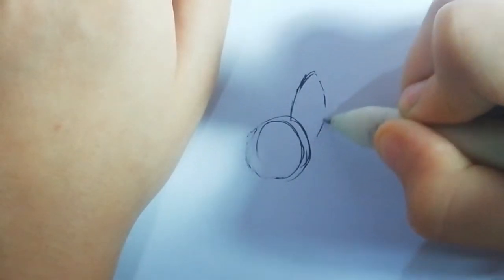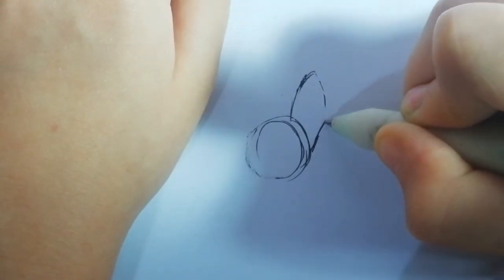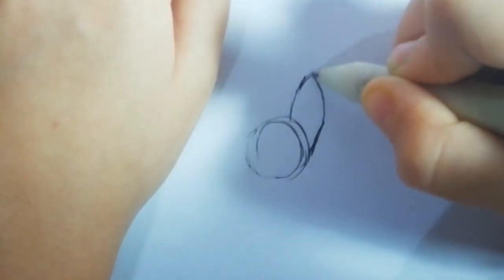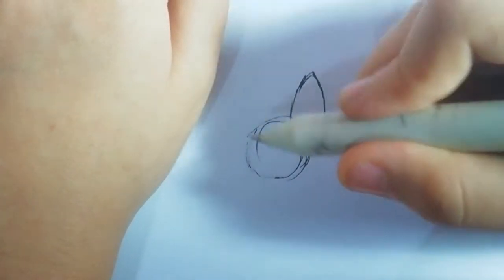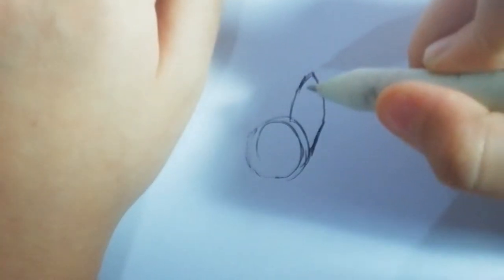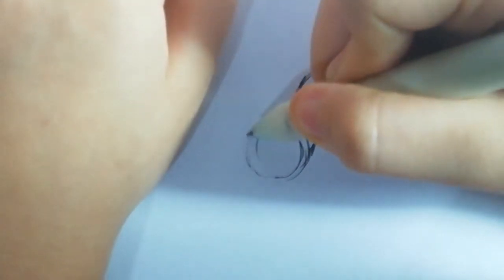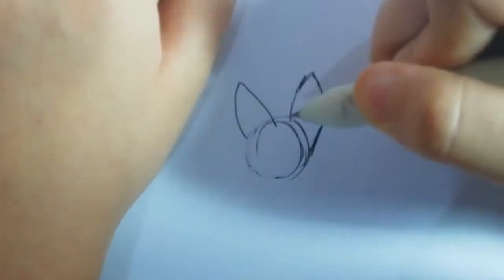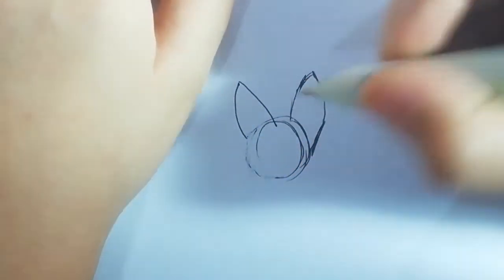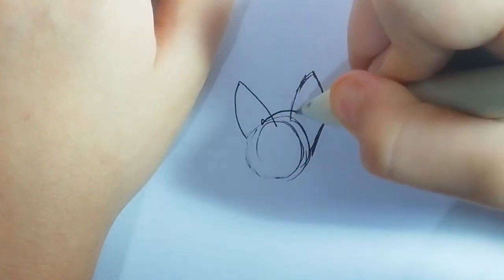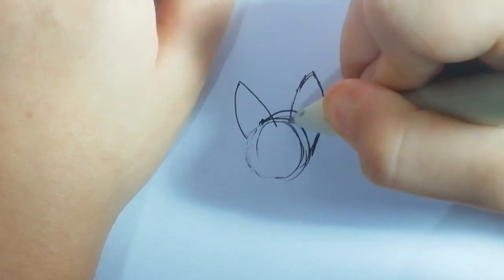If you want to look at that side, you just make it more longer if you want. You can make short ears, but this is an Egyptian cat. Now you draw the other ear, but it's shorter this time because it's not going that side.